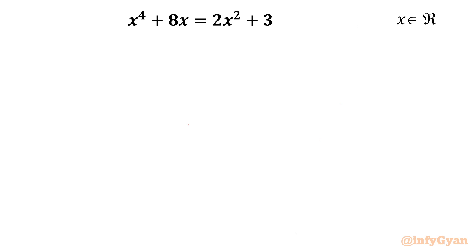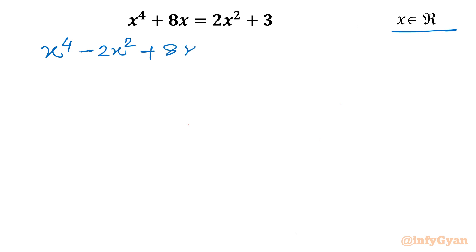Welcome back to Infigian Idea Friends. In this video we are going to take up one very interesting algebraic challenge. It is from quartic equations: x power 4 plus 8x is equal to 2x square plus 3. We have to find out all real solutions. So let us get started by writing our quartic equation to one side: x power 4 minus 2x square plus 8x minus 3 equal to 0.